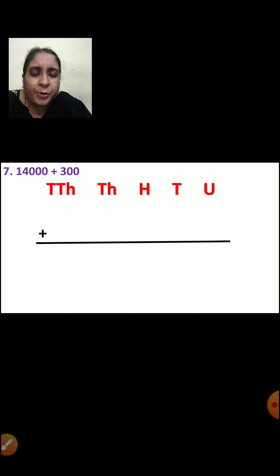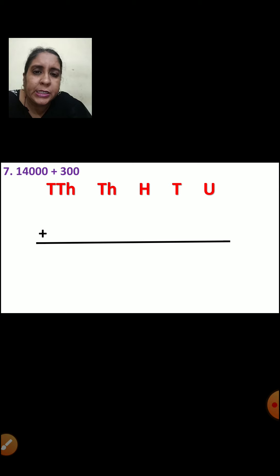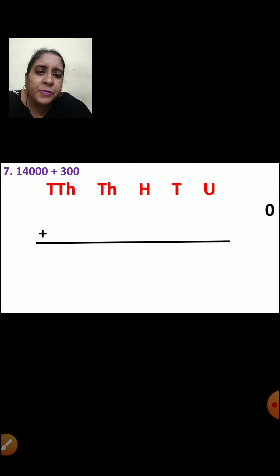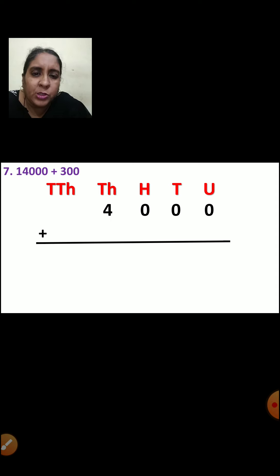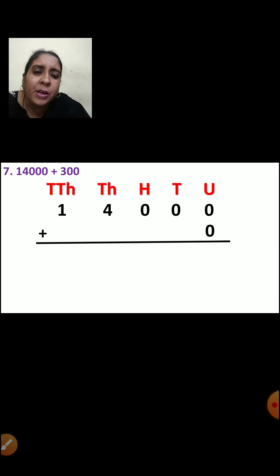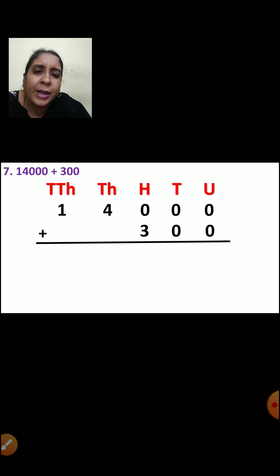Now one more sum we are going to do. The question is 14000 plus 300. One is a 5-digit number and the other is a 3-digit number. Now let us arrange the numbers. First you will write the place: units, tens, hundreds, thousands, ten-thousands. Now 0 will come in units place, 0 will come in tens place, 0 will come in hundreds place, 4 will come in thousands place, and 1 will come in ten-thousands place. For the next number: 0 will come in units place, 0 will come in tens place, and 3 will come in hundreds place.